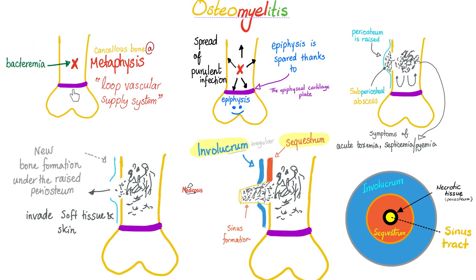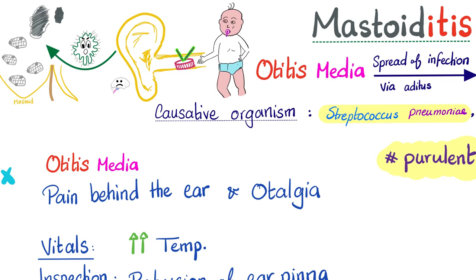Sometimes a sinus will form in the middle, connecting the osteomyelitis to the outside world, facilitating the spread of infection. There is bacteremia, pyemia, subperiosteal abscess, and all kinds of issues. If you want to learn about mastoiditis, check out my video titled Mastoiditis in this 5-minute review playlist.